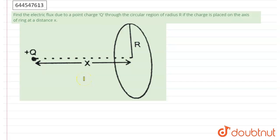According to the question, we have to find the electric flux due to a point charge q through a circular region of radius capital R, where the charge is placed on the axis of the ring at distance x. In that condition, the electric flux due to the point charge at each point of the disc will be different.